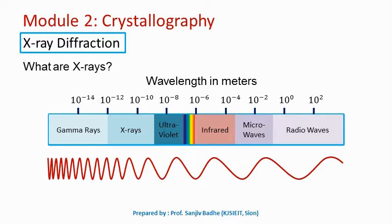What are X-rays? X-rays are electromagnetic waves having a very short wavelength in the range of 1 to 10 angstroms. Gamma rays have very small wavelength and radio waves have very large wavelength. X-rays fall somewhere in the middle, with wavelength of the order of 1 to 10 angstroms.